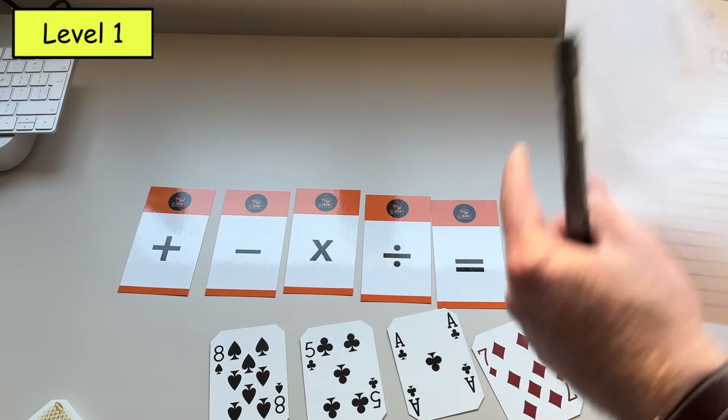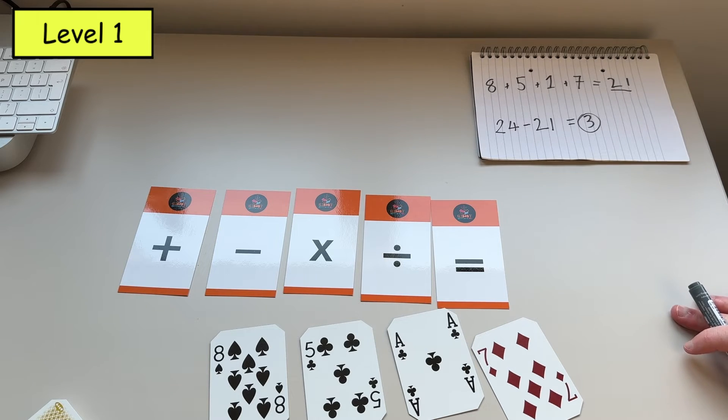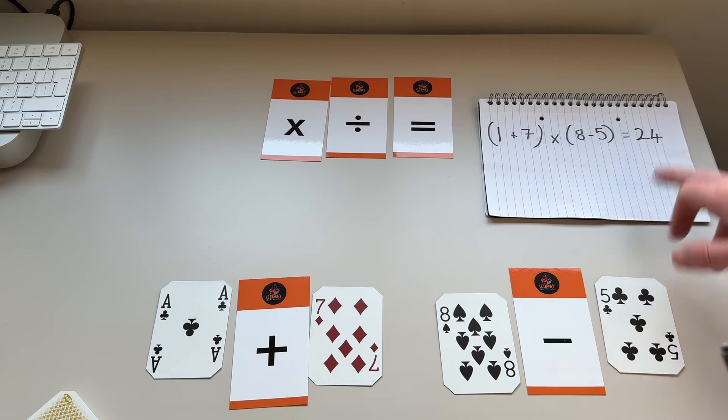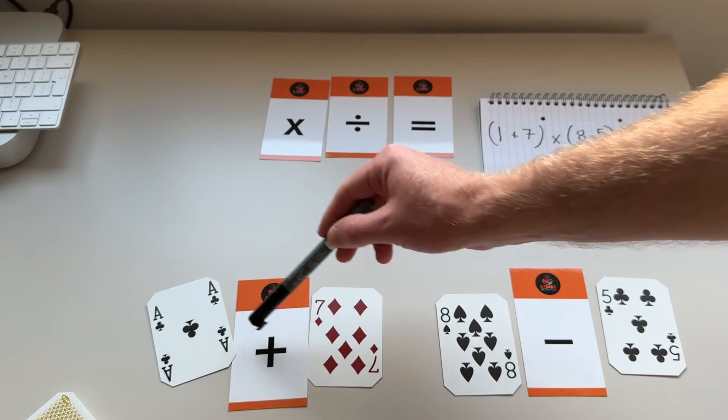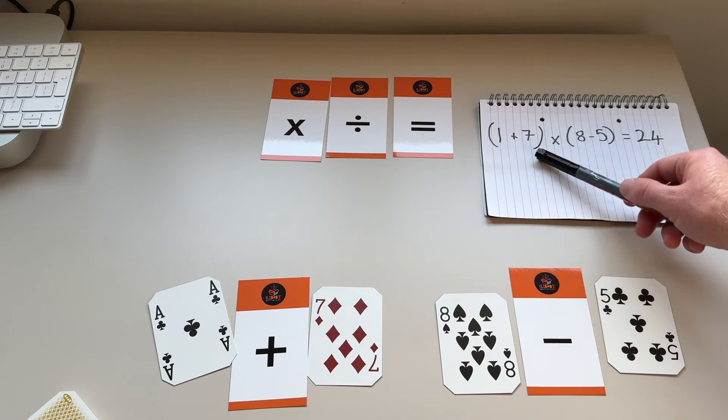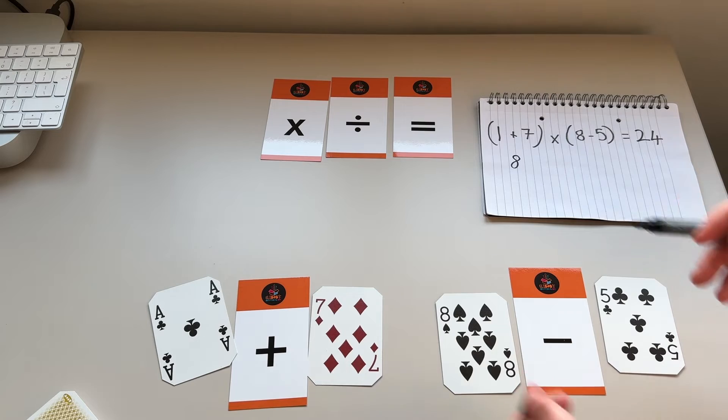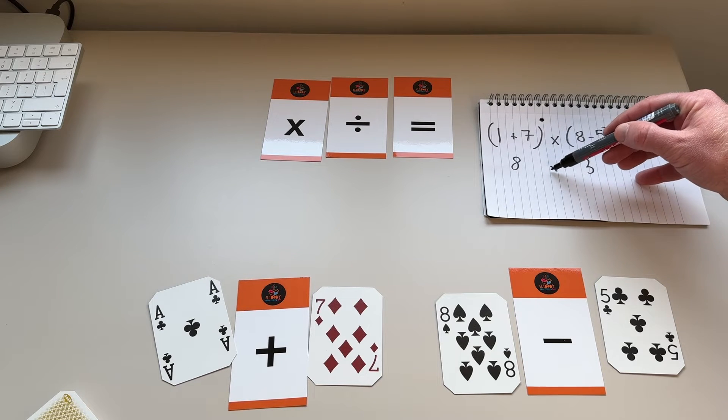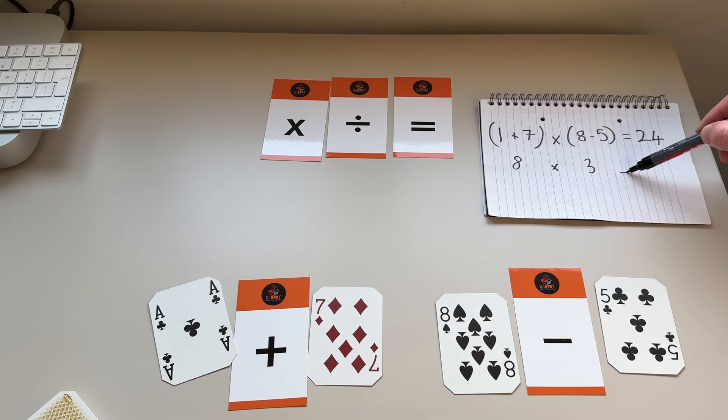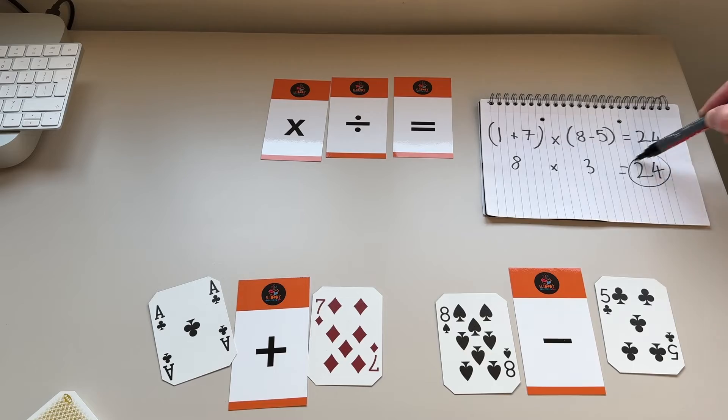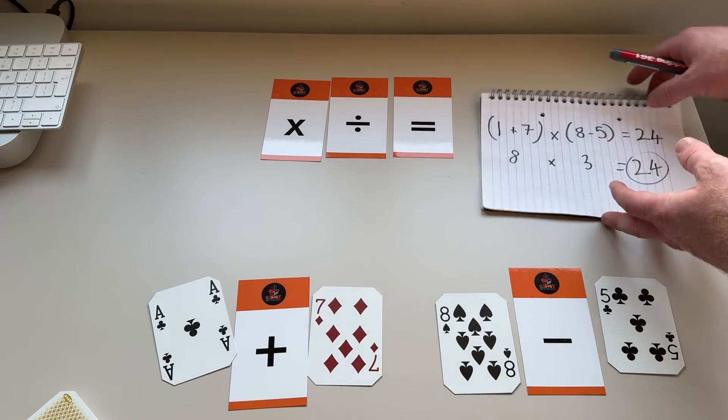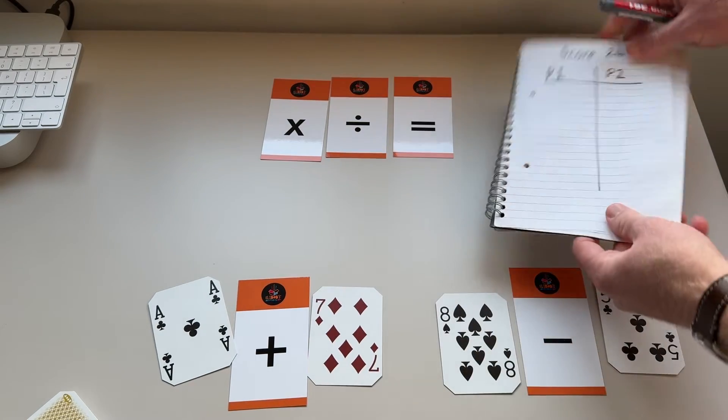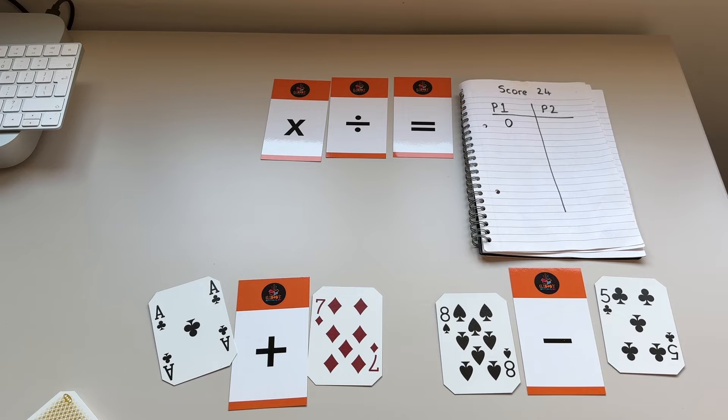But if I was to use my mental math skills, I might decide to use BODMAS and brackets. I have been able to make exactly 24 here, because I have one add seven, and I've put those in brackets, as you can see here. So that gives me eight. And then I've got eight take away five in another set of brackets, which gives me three. And then I've got a multiplication sign in the middle. So it's eight multiplied by three. And that gives me a score of exactly 24. If I would have played this as my score, then I would have received a score of zero, because I made exactly 24.